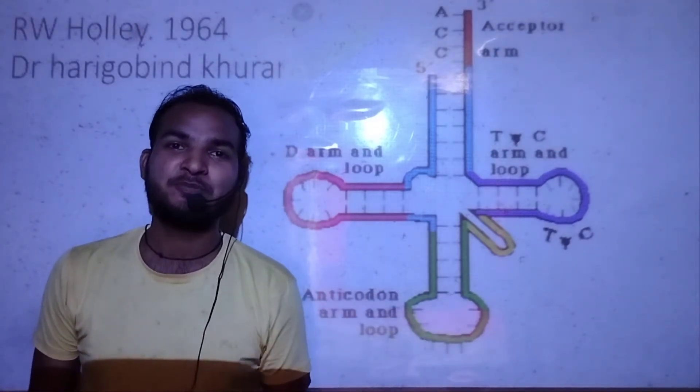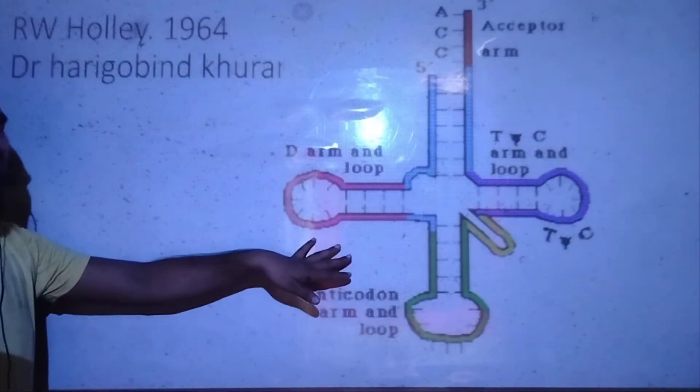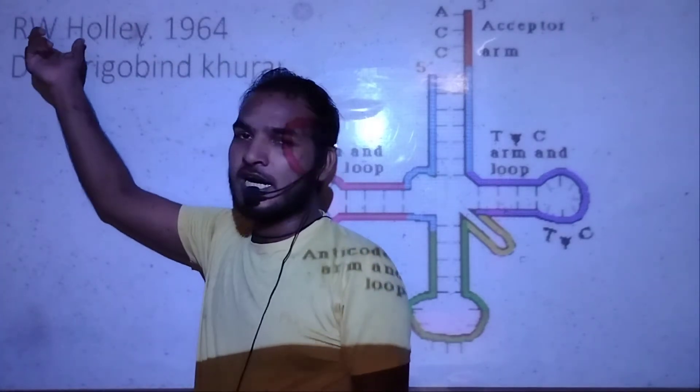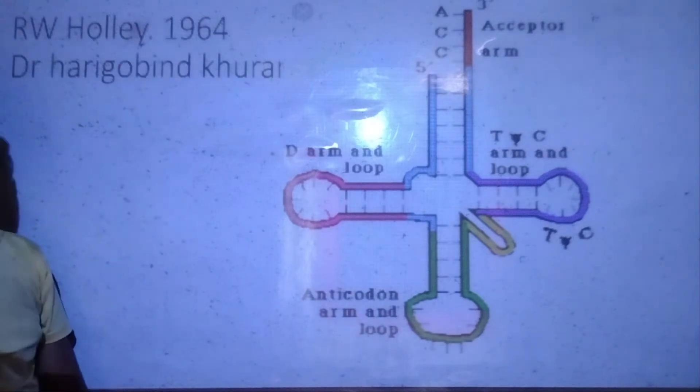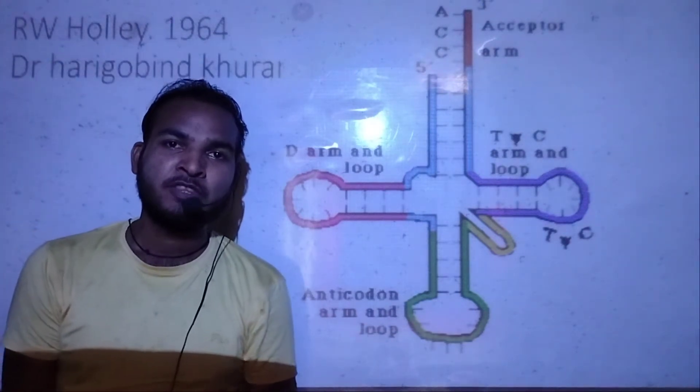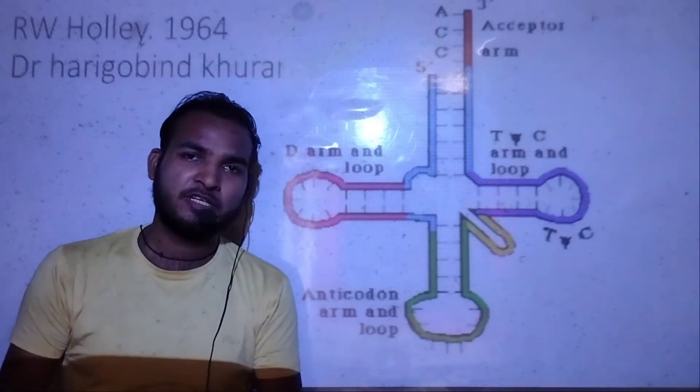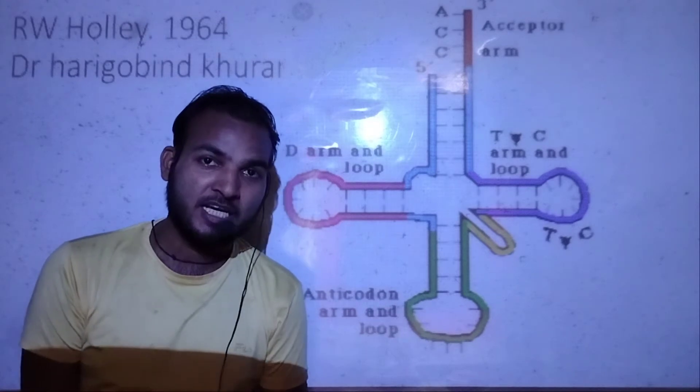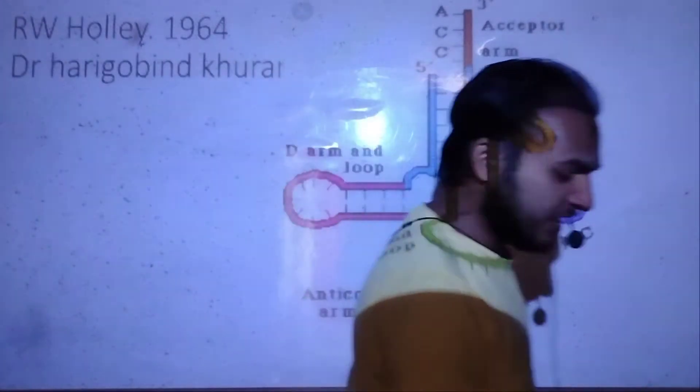I am going to explain what tRNA is about. When you talk about the discovery of tRNA, it was first discovered by R.W. Holley in 1964. The Nobel Prize was given along with Dr. Har Gobind Khorana. This is the structure of tRNA.